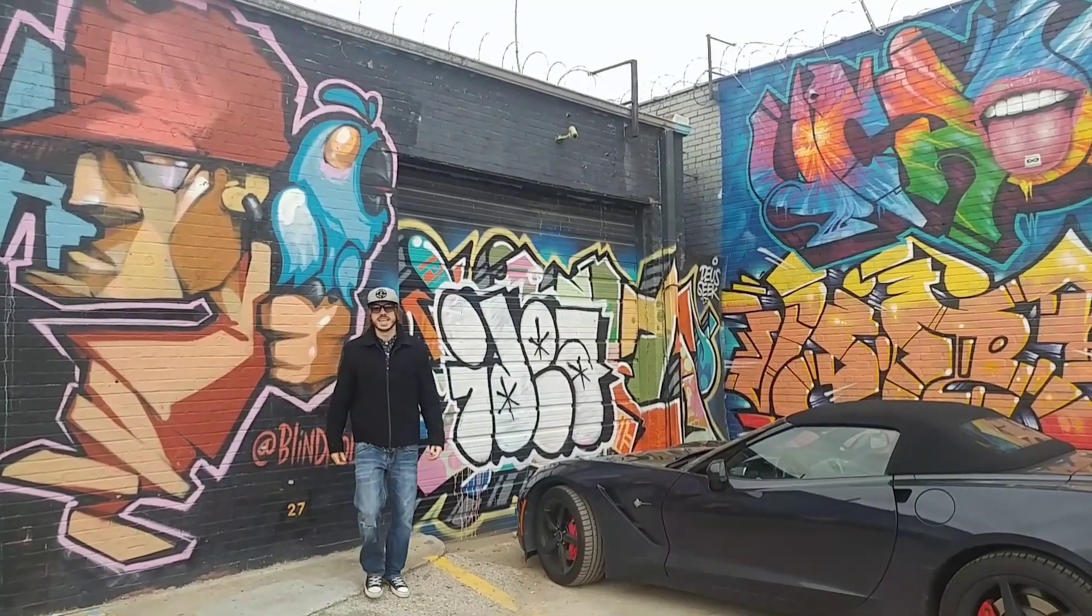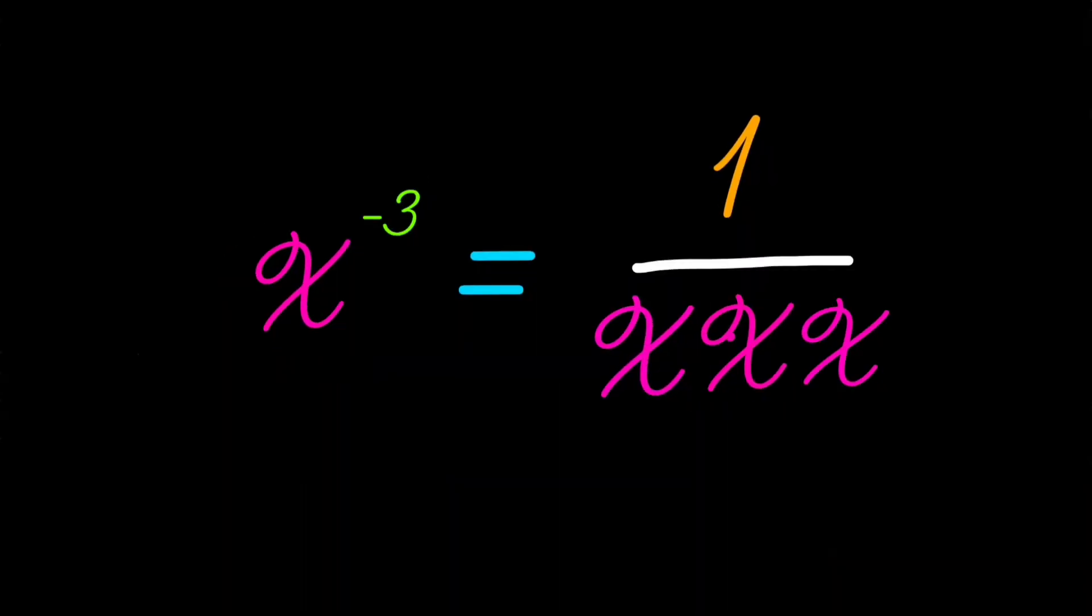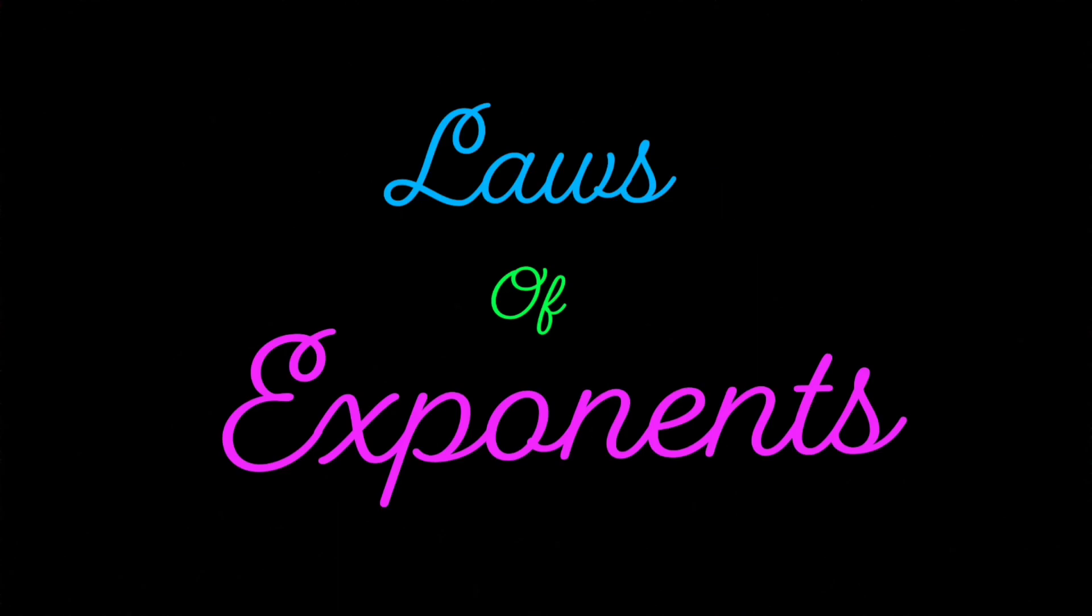So a negative exponent, that must mean divide. X to the power of negative B is equal to 1 over X to the B. So X to the power of negative 3 is equal to 1 over X to the 3. These are the laws of exponents.